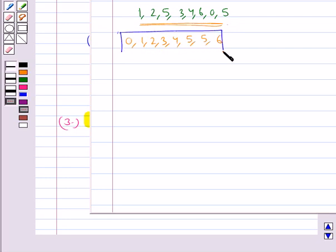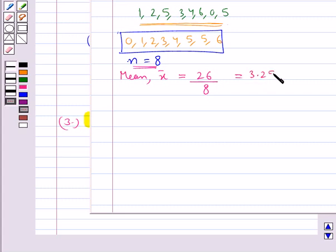Now from this given data, we have that the total number of observations, that is n, is equal to 8. Now the mean, that is x̄, is equal to the sum of the observations, which is equal to 26, upon the total number of observations, that is n. This is equal to 3.25.